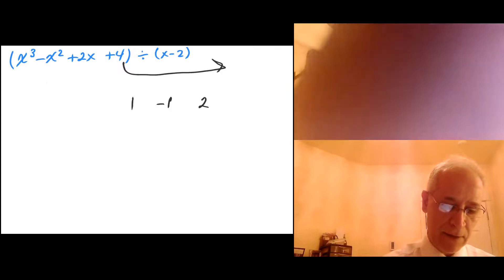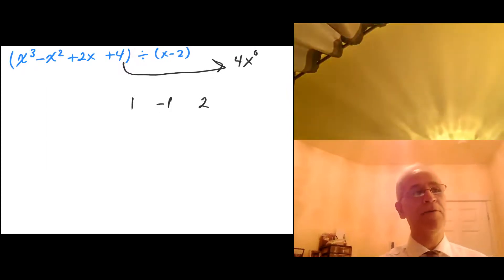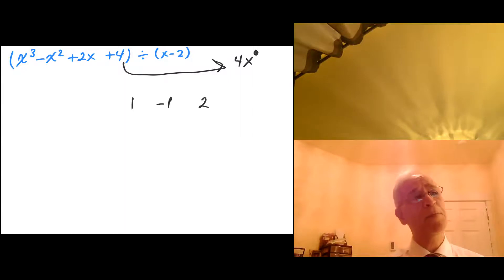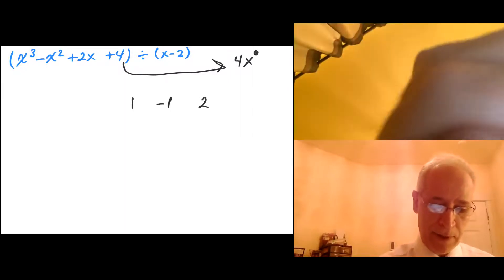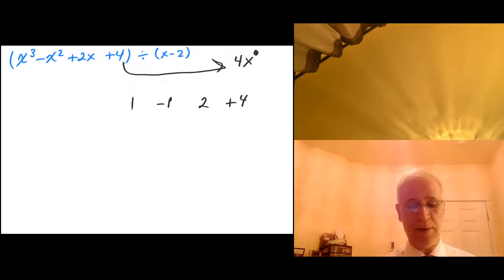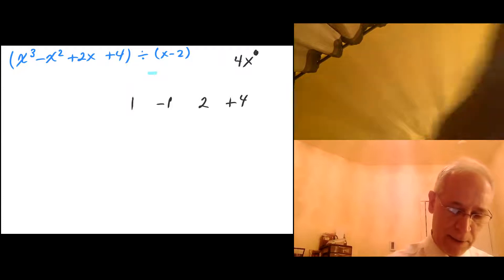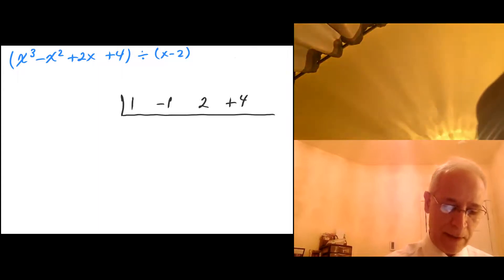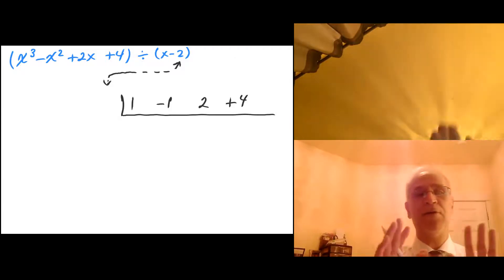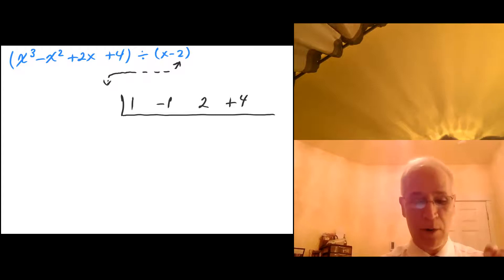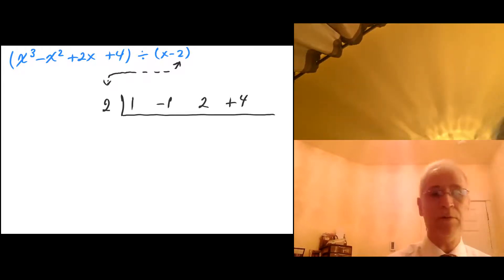You can think of the constant 4 as 4 times x to the power of 0 if that's helpful to you — it's not necessary, but some students find it helpful. So in order of descending powers: 1x cubed minus 1x squared plus 2x plus 4. Now, I'm going to use a positive 2 from the x minus 2. Because we have negative 2, you want to use the positive of that. Just trust me on that.